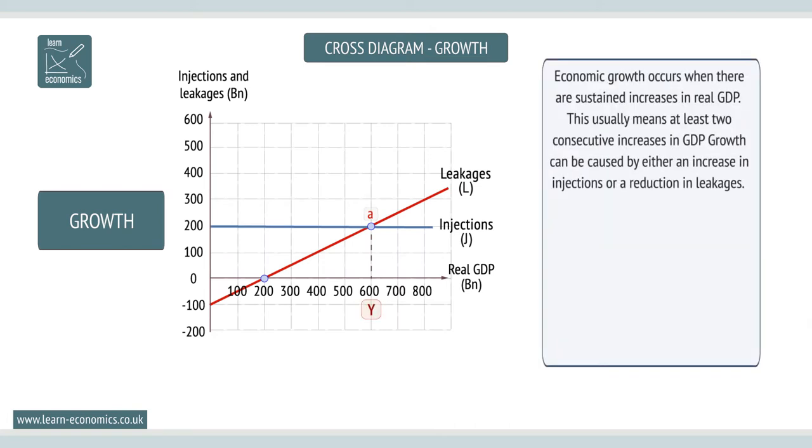Economic growth occurs when there are sustained increases in real GDP. This usually means at least two consecutive increases in GDP growth.